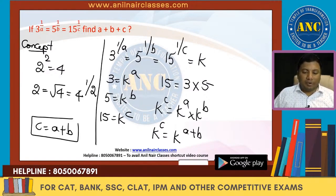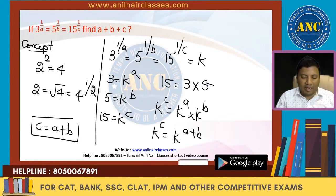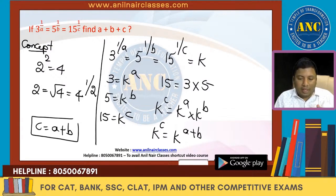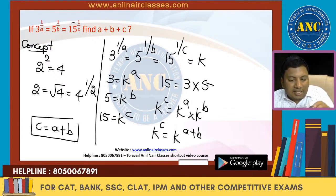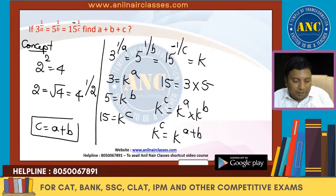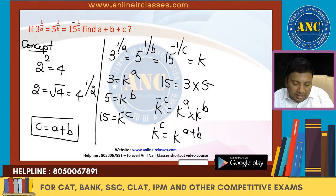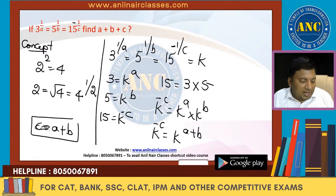The question asks for A + B + C. Since C = A + B, if we put a minus sign, D = −C, then A + B + C + D = A + B + C − C = 0. So A + B + C = 0. Very easy question — sometimes easy questions are also asked.